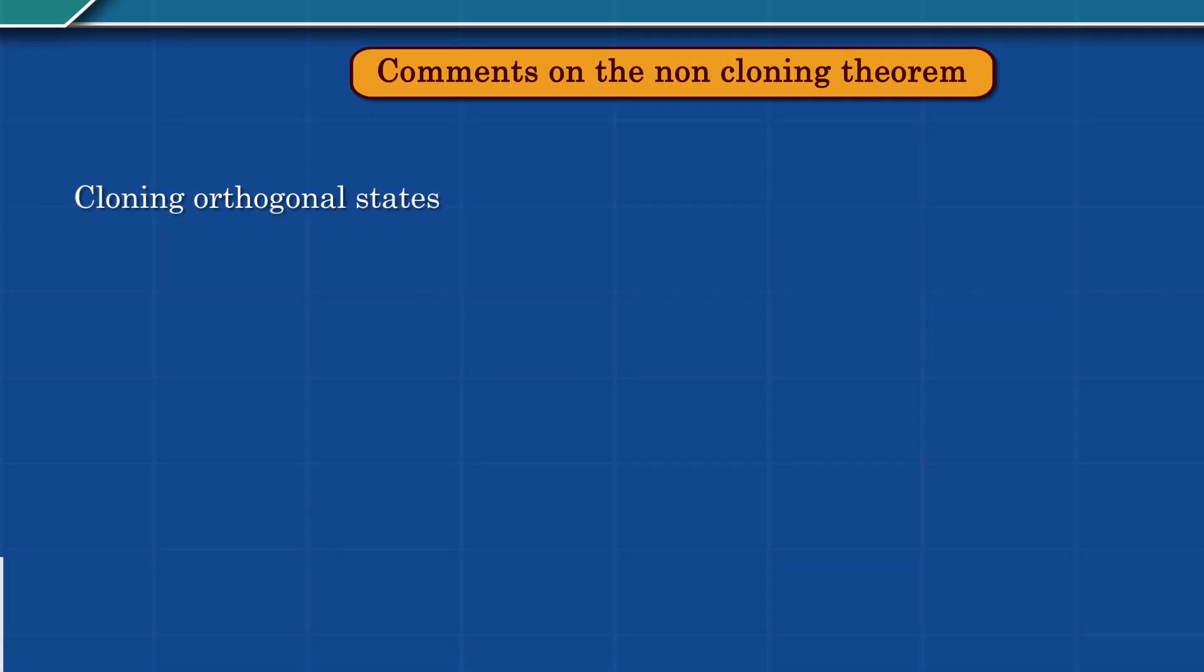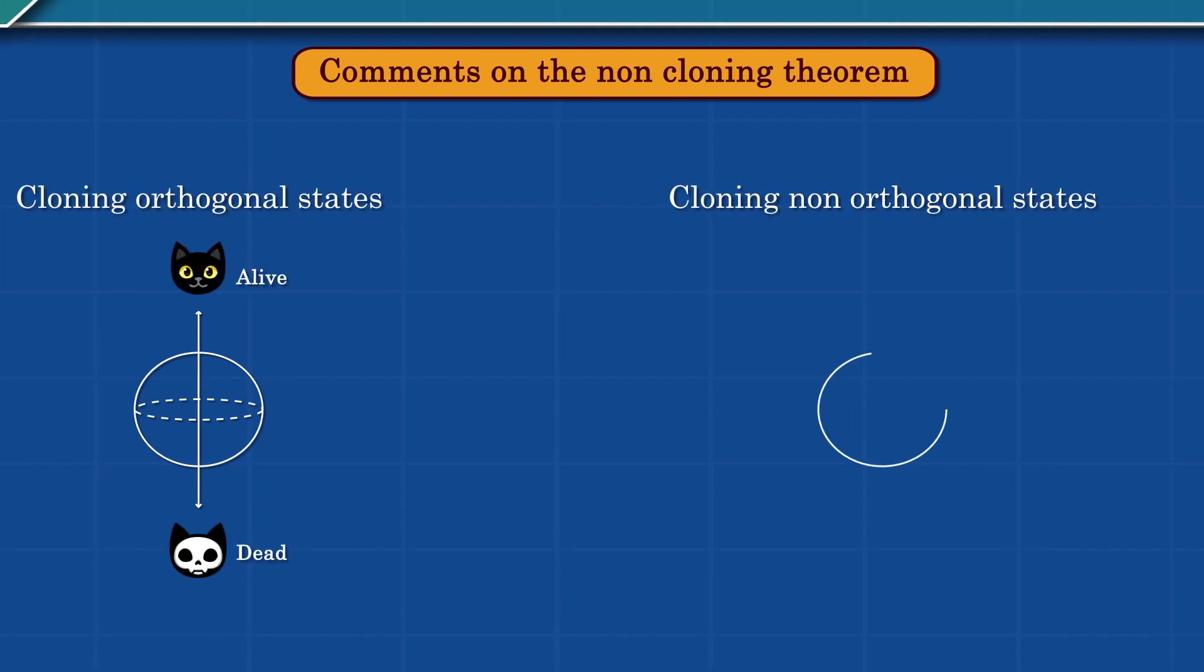What is true is that you can only design cloning machines that can clone orthogonal states. The dead cat and the alive cat are orthogonal to each other. Furthermore, if you have a cloning machine that can clone zombie cats perfectly, the same machine will not be able to clone dead and alive cats.